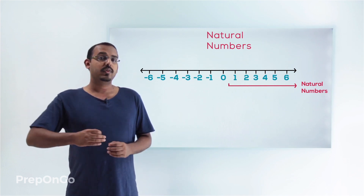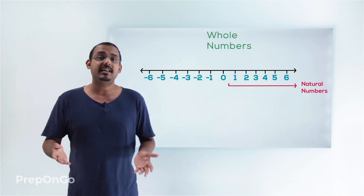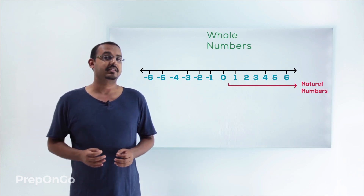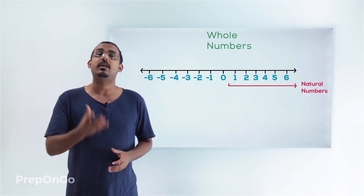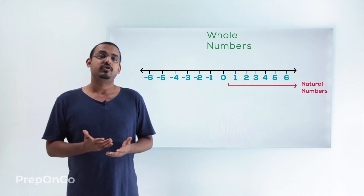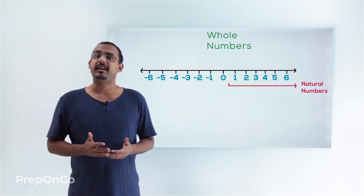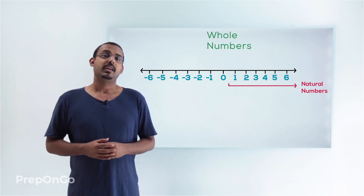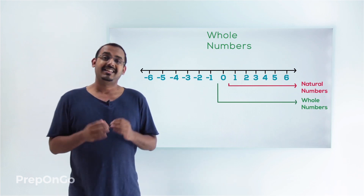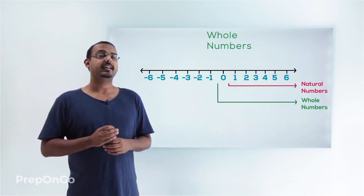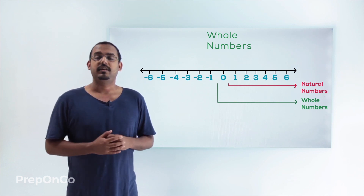Moving on, the next category of numbers is whole numbers. As the name represents itself, whole numbers are numbers which are whole, or complete. There has to be no fractional or decimal point in a whole number. So the numbers from 0 onwards — all these numbers are what we categorize as whole numbers.